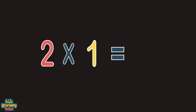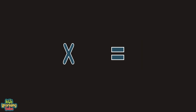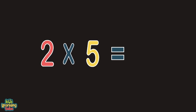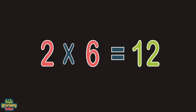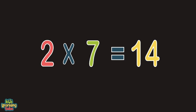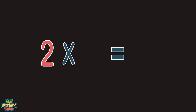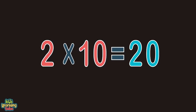Two times one does equal two. And two times two equals four, this is true. Two times three does equal six. And two times four equals eight in this mix. Two times five will always equal ten. And two times six equals twelve here and then. Two times seven does equal fourteen. And two times eight equals sixteen on the scene. Two times nine equals eighteen. And two times ten equals twenty again.